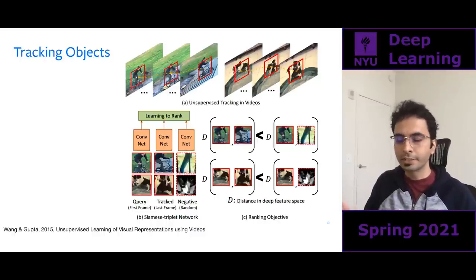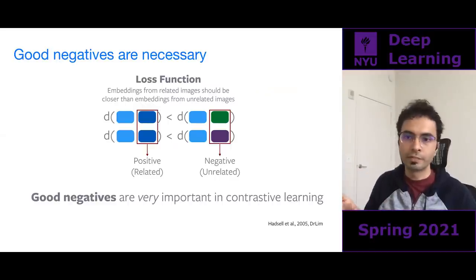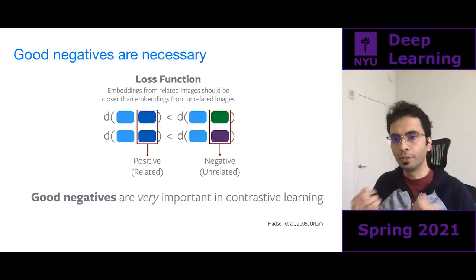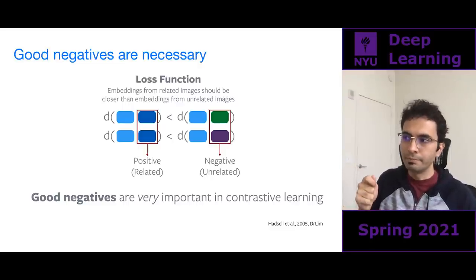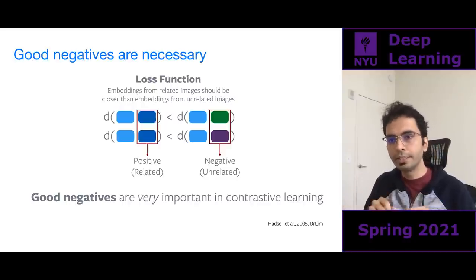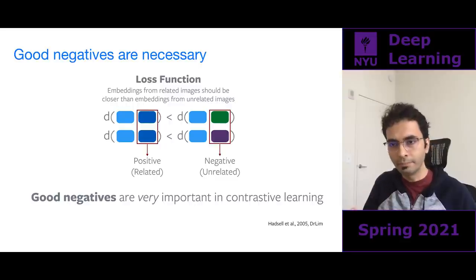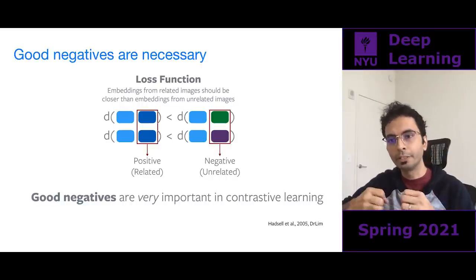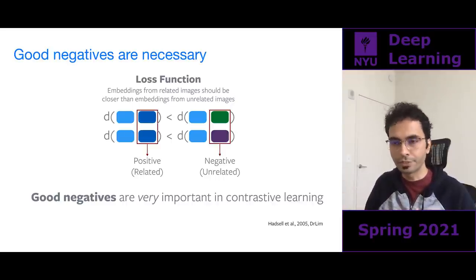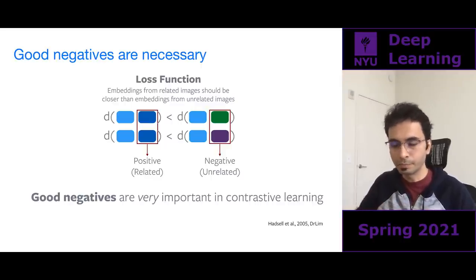What fundamentally prevents trivial solutions in contrastive learning? It comes from the objective function itself. If you tried to produce a trivial solution you would not satisfy the contrastive loss: the distance between positive embeddings should be smaller than the distance between negative embeddings. A constant embedding would not minimize this. By having an attraction force between positives and a repelling force between negatives, you prevent trivial solutions. Good negatives are really important — a lot of research has gone into how to get them.